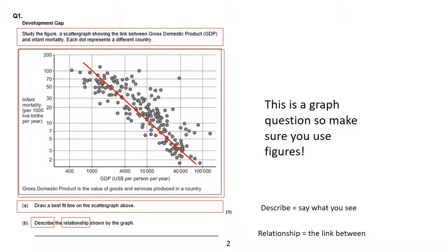Another way you can get the marks here is to spot an anomaly. There is one anomaly particularly that sticks out earning around about $39,000 with an infant mortality rate of 70. So you could write that in your answer and say the general rule is as GDP increases, infant mortality decreases. However, an anomaly to this rule is, and make a note of that point. That would also get you two marks.